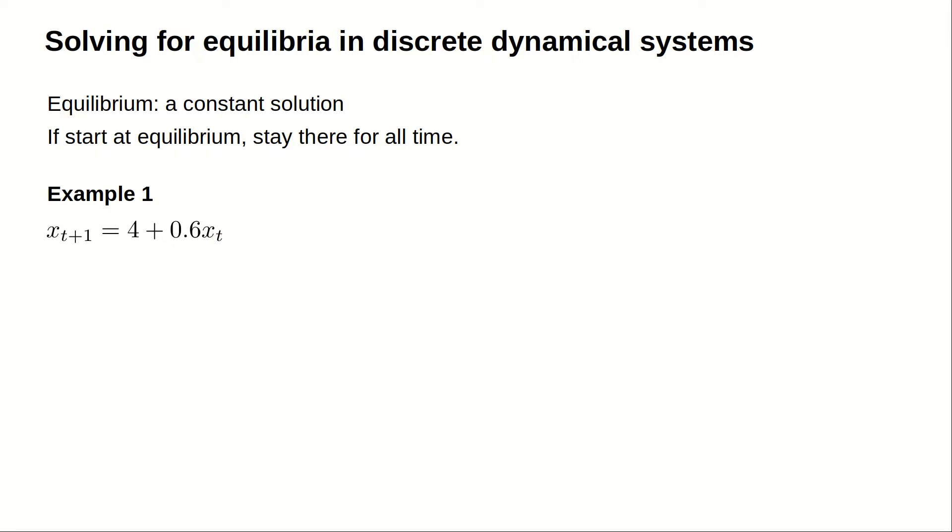Let's work it out with an example. Let x sub t plus 1 equal 4 plus 0.6 times x sub t.